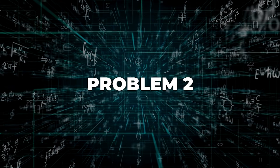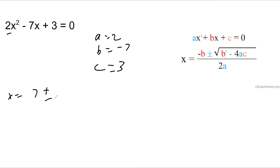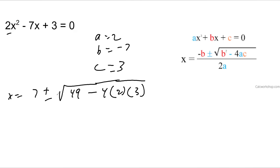Here we've got a coefficient that's not a 1 in front of x squared. So a equals 2, b is equal to negative 7, c is equal to 3. I'm going to plug it into the formula. x equals negative b — negative negative 7 is 7 — plus or minus the square root of b squared: negative 7 squared is 49, minus 4a (which is 2) times c (which is 3), all over 2a, which is 4.